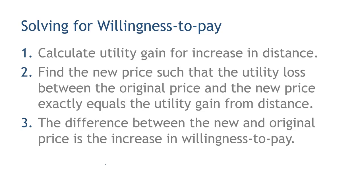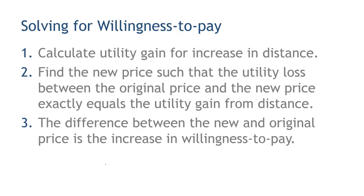The first thing we need to do is calculate the utility gain for the increase in distance — we're going to give the ball five more yards. Our engineers said they can do that. We need to figure out how much happier people will be with that new ball. Then we're going to find the new price, and it's going to be a bigger price because we're giving them a better ball and charging more.